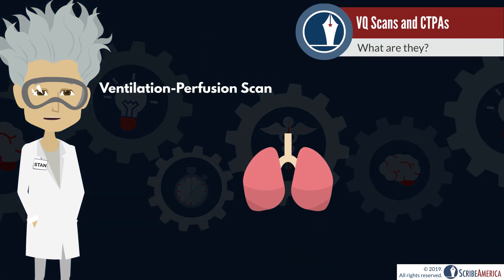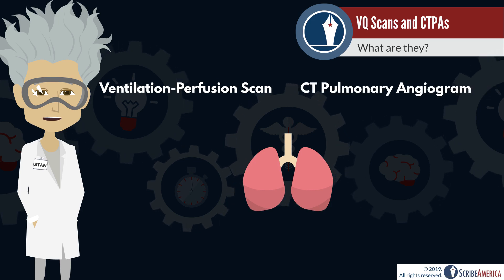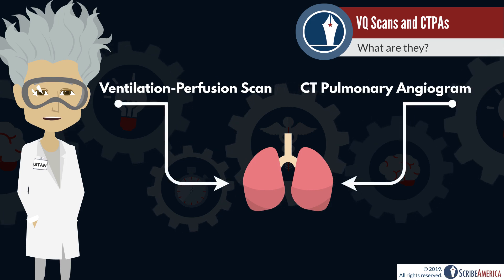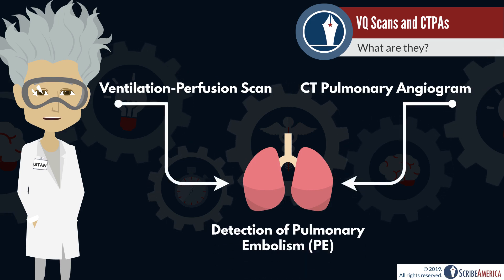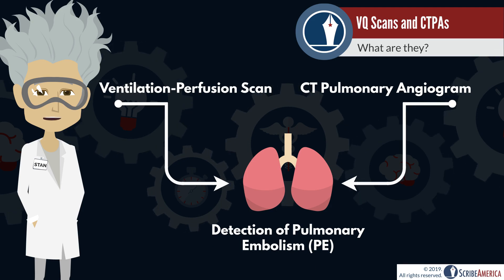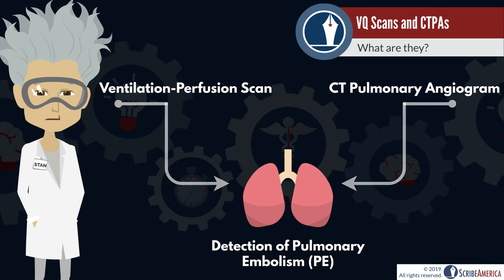Ventilation perfusion scans and CT pulmonary angiograms are primarily used to test for pulmonary embolism, which is a blood clot in the lung or the pulmonary arteries leading from the heart into the lungs.